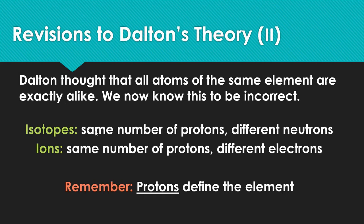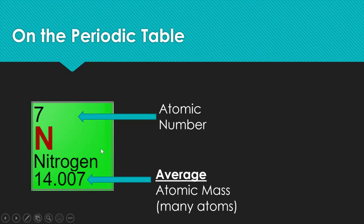One thing Dalton got wrong: he said atoms of the same element are exactly alike. That's not exactly true. There are things called isotopes, which have the same number of protons but different numbers of neutrons. There are also things called ions, which have the same protons but different numbers of electrons.